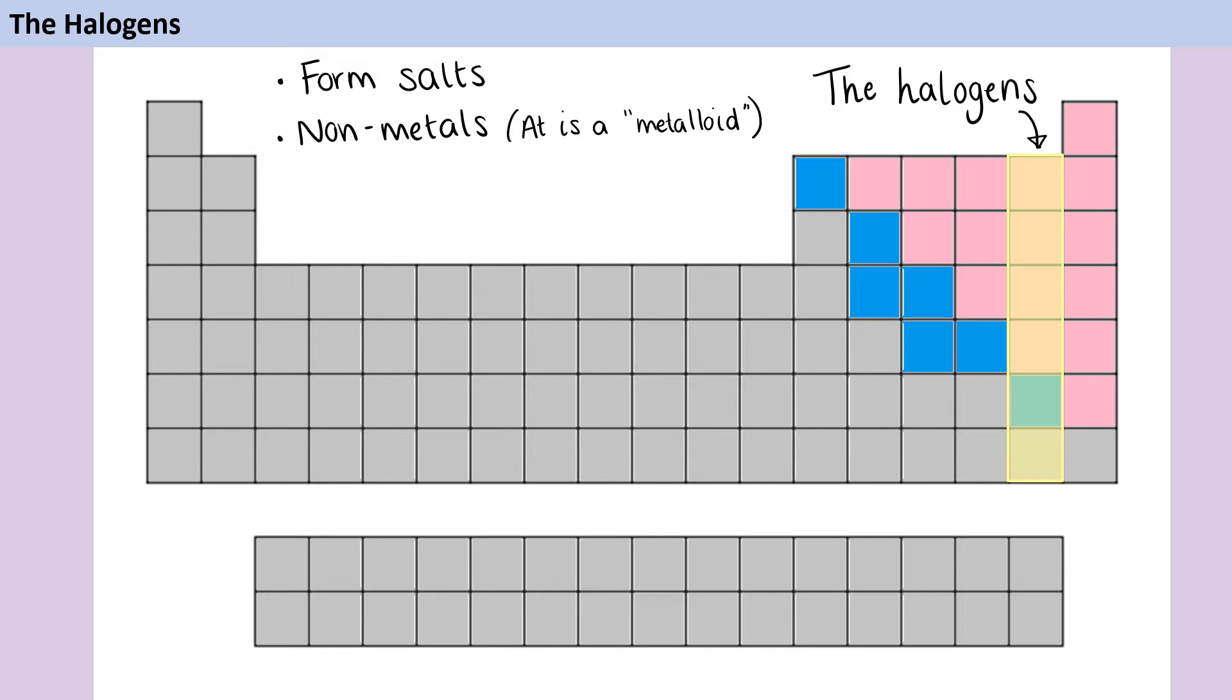The halogens are also smelly. Chlorine is one example. And they're also poisonous. You probably know already that chlorine is used to disinfect water by killing bacteria, and it can also be used as a chemical weapon to kill people.